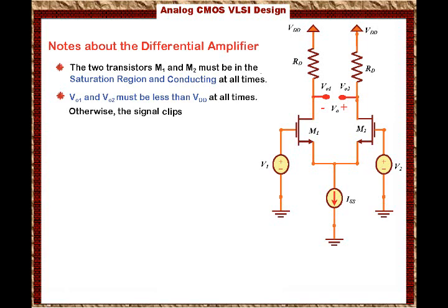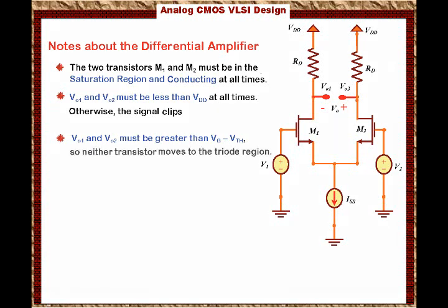Here is the third note. Vout1 and Vout2 must be greater than Vgs minus the threshold voltage, so that neither transistor moves to the triode region, because Vds must be greater than Vgs minus the threshold voltage. That's the condition of saturation, and this has to be true at all times.